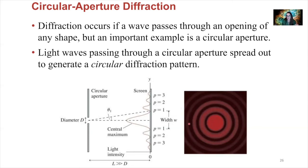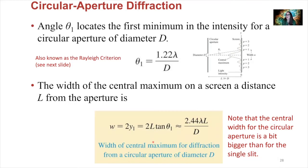If you were to take a slice through here and look at the intensity of the light across the midpoint, it looks similar to our single slit experiment. We've got a broad central width and a bunch of dark fringes and bright fringes on either side. Of course, we have some equations to describe this diffraction pattern from a circular aperture.